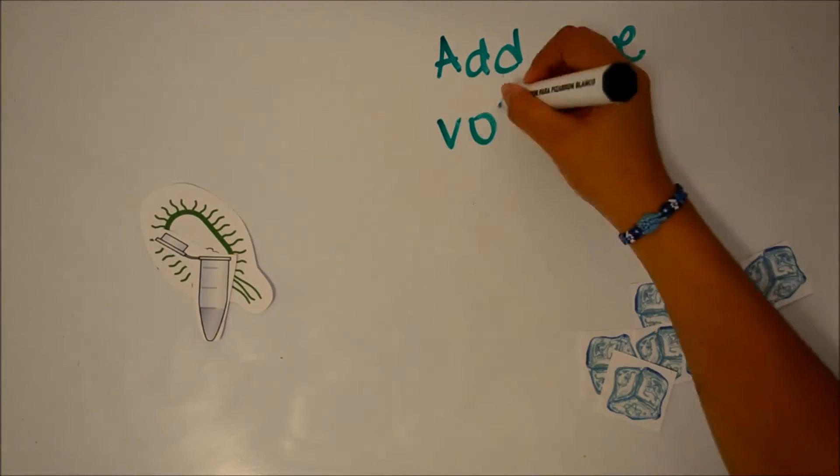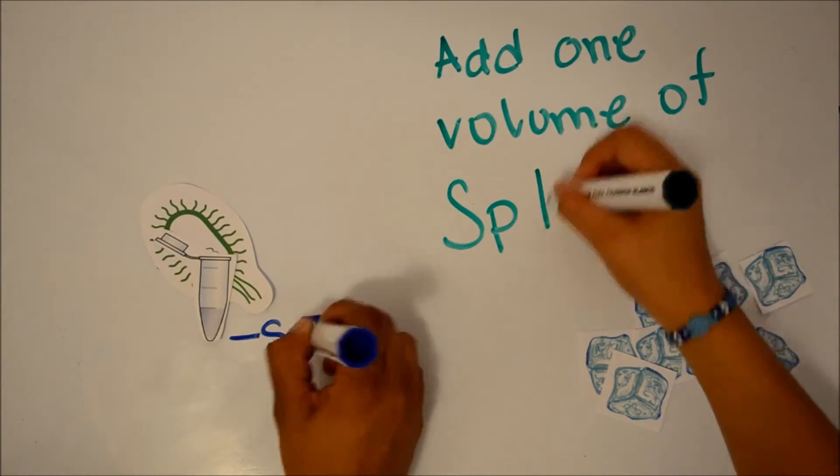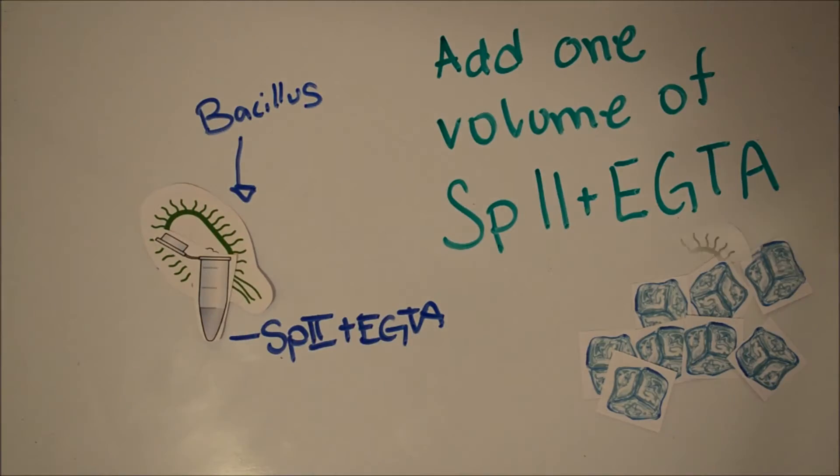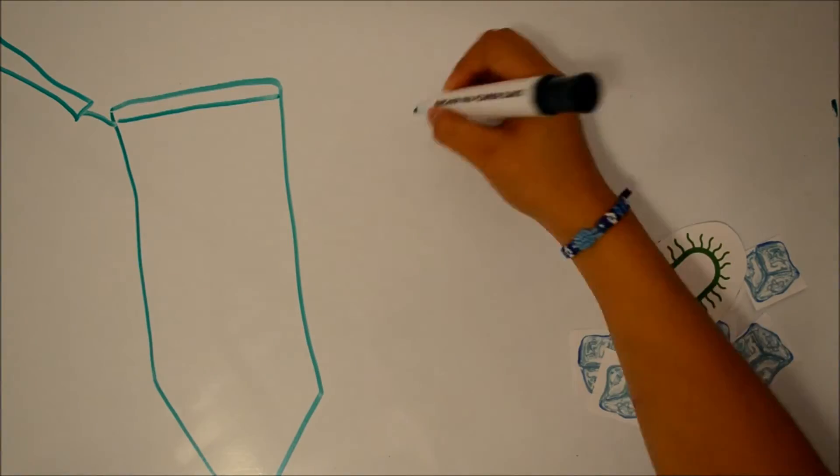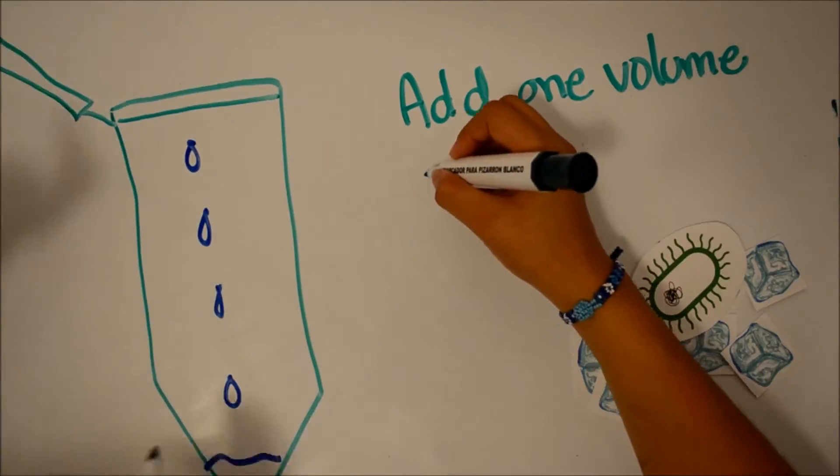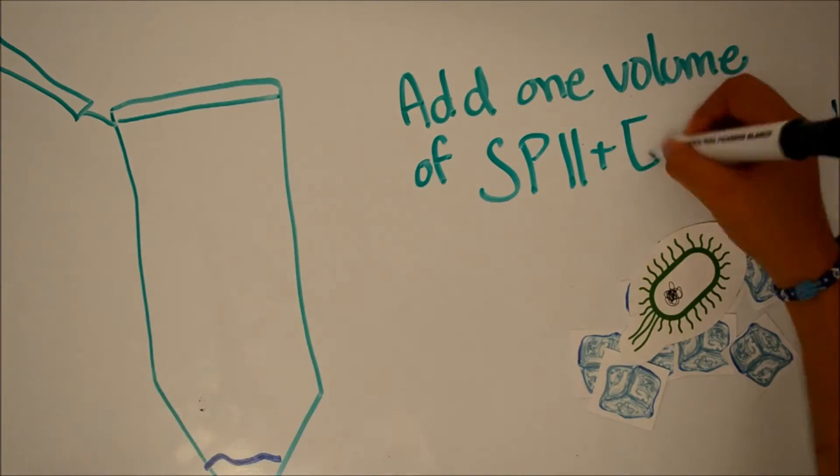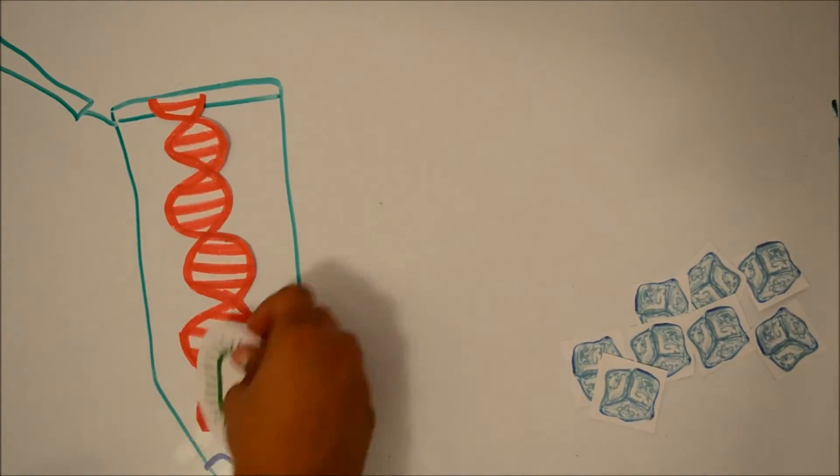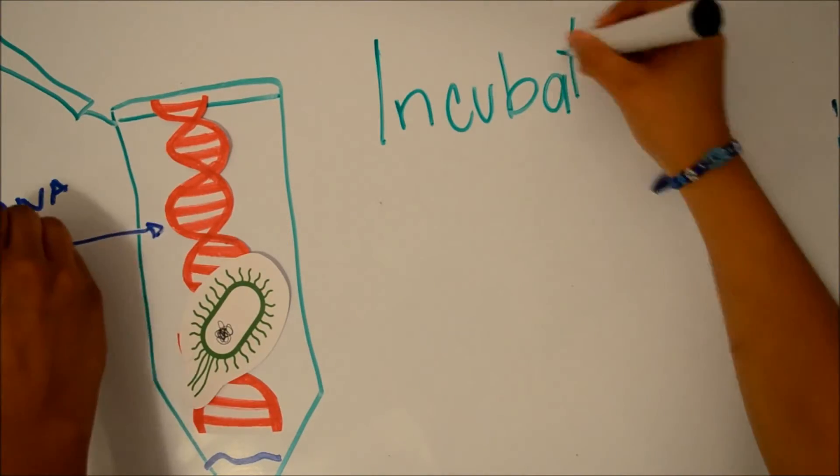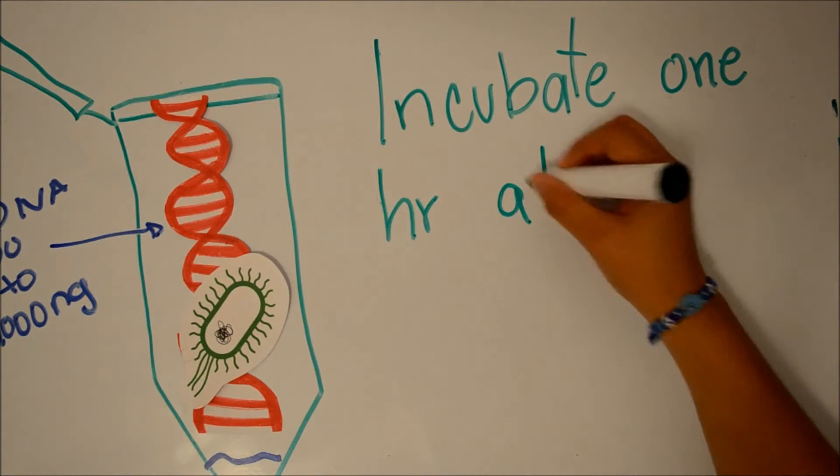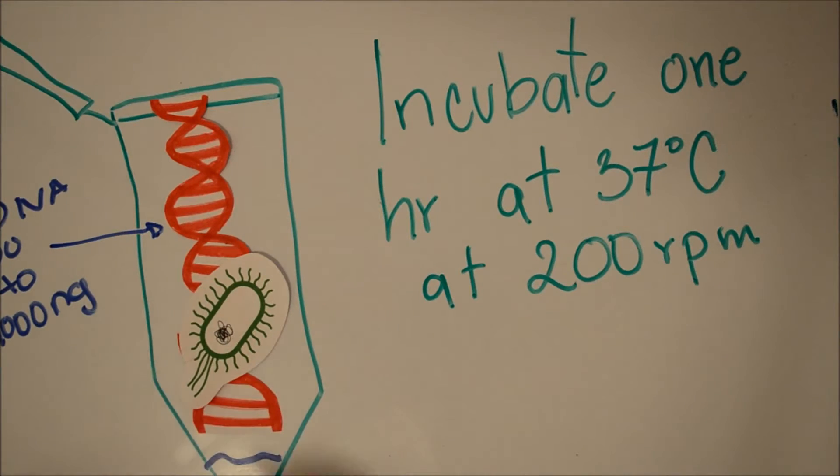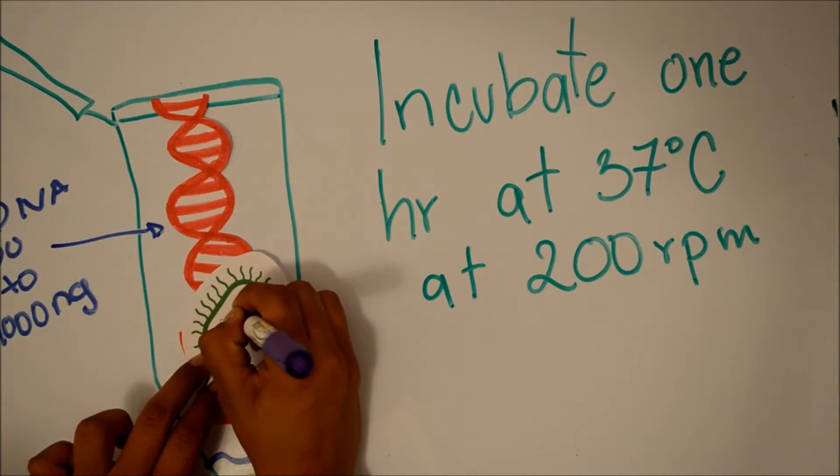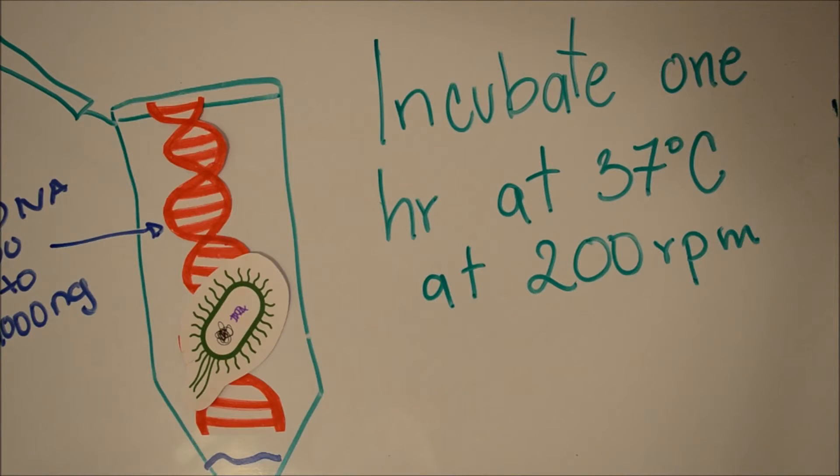Add one volume of SPC2 plus EGTA to the competent cells. Mix gently. Add the DNA solution and incubate at 37 degrees for 1 hour at 200 rpm. Plate 100 microliters immediately onto selected media.